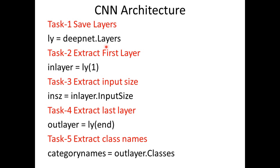If you want to extract each and every layer and study how they are, you can access ly(1) — that is the first layer — and call it with a variable named in_layer. This gives the first layer. If you want to see the input size of that layer, we use in_layer.InputSize to a variable i and z, which gives you the input size of this first layer.